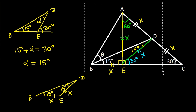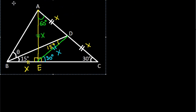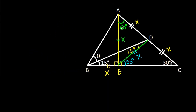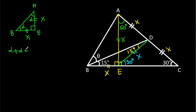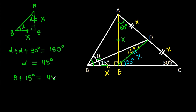In triangle ABE, angle AEB is 90 degrees and AE equals BE equals X, so the two base angles are equal. Let each be alpha. Then alpha plus alpha plus 90 degrees equals 180 degrees, giving alpha equals 45 degrees. Since alpha equals theta plus 15 degrees equals 45 degrees, we get theta equals 30 degrees.